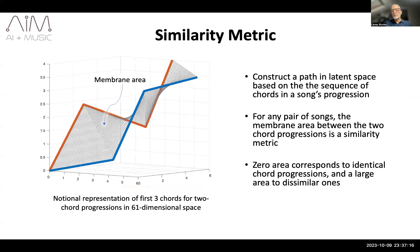We use the vectors to represent chord progressions by constructing a path in 61 dimensional space. The path begins with the first chord from the progression; its vector starts from the origin and has a length normalized by the number of beats for the chord. Stepping through the chord progression, each new vector is attached to the chain of previous ones, creating a path as is notionally represented in 3D by this figure. For any pair of songs, the area of the membrane established between the two paths can be computed and should be small for harmonically similar songs.